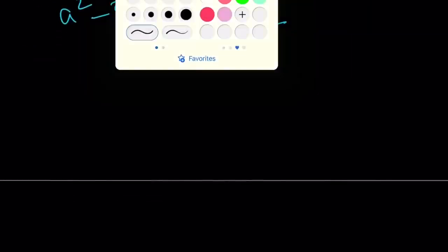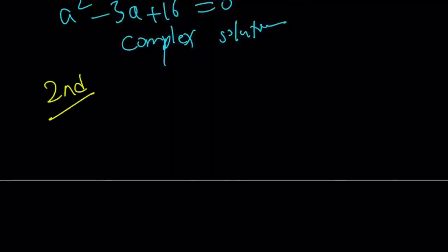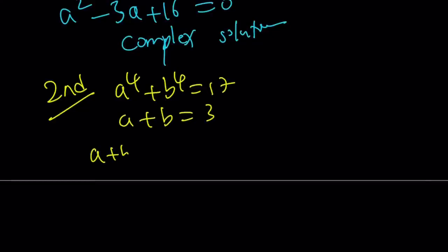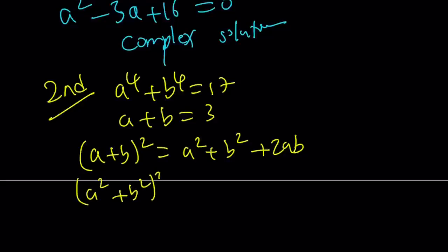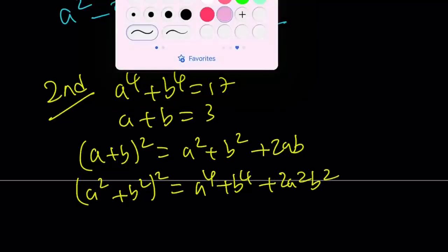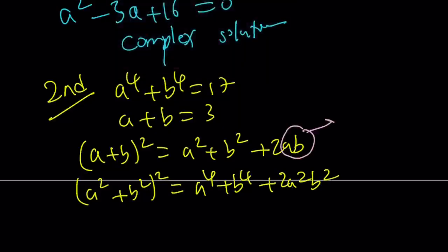The second approach kind of uses a different idea. What do I know? I have a to the 4th plus b to the 4th is equal to 17. And, I have a plus b is equal to 3. Here's what I'm going to do. I'm going to go ahead and square a plus b. That's going to give me a squared plus b squared plus 2ab. Now, let's go ahead and square a squared plus b squared. That's going to give me a to the 4th plus b to the 4th plus 2a squared b squared. I'm going to use substitution here. No surprises, right? Ab, I'm going to call that p.